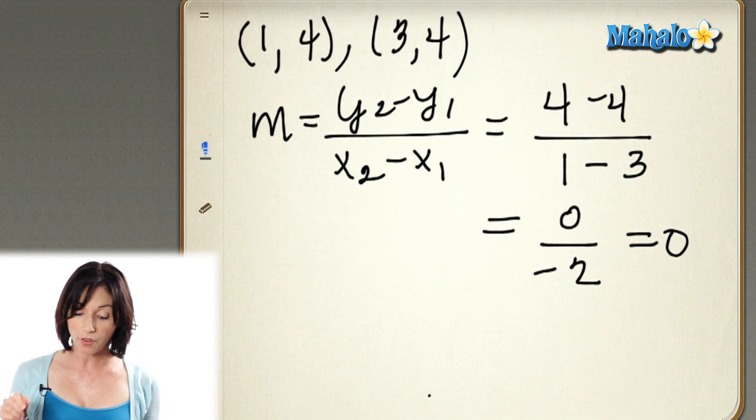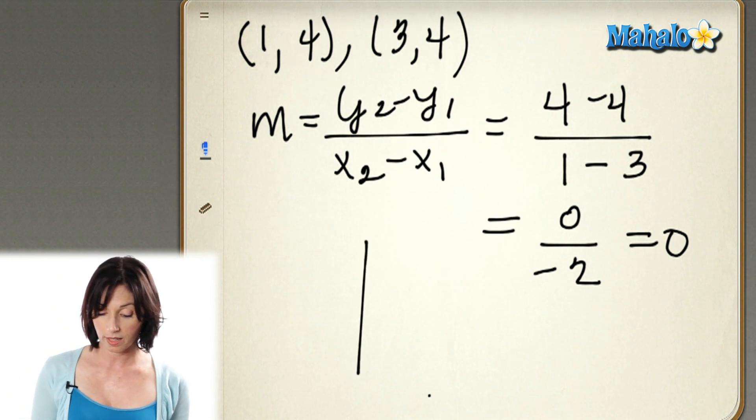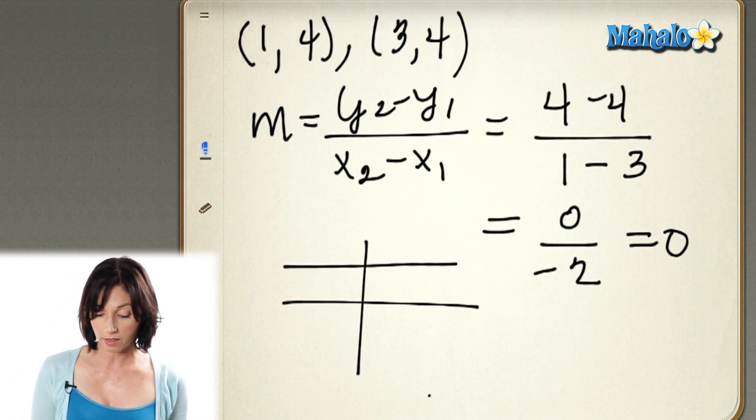It's sloping 0. Therefore, this will be a horizontal line. It will be parallel to the x-axis.